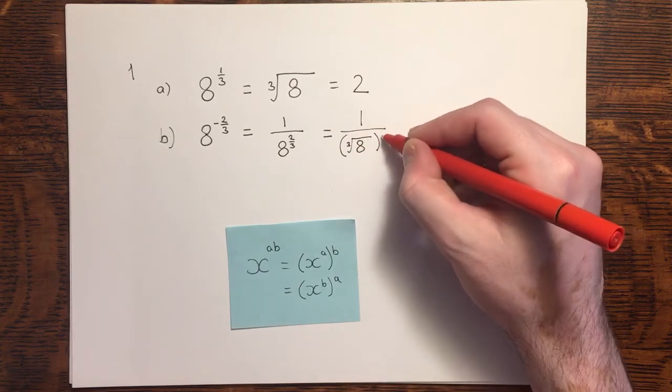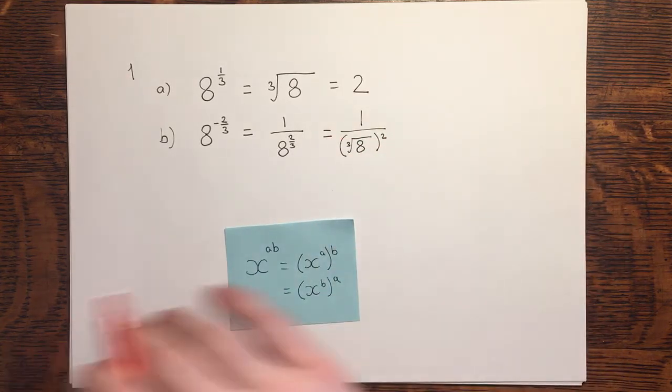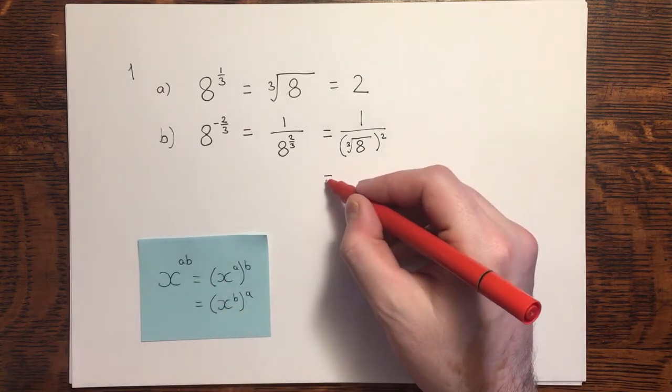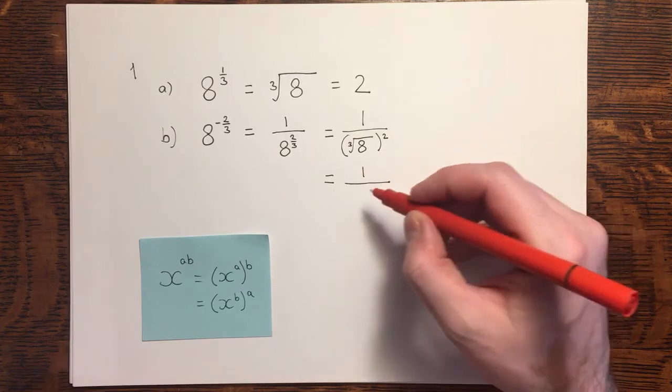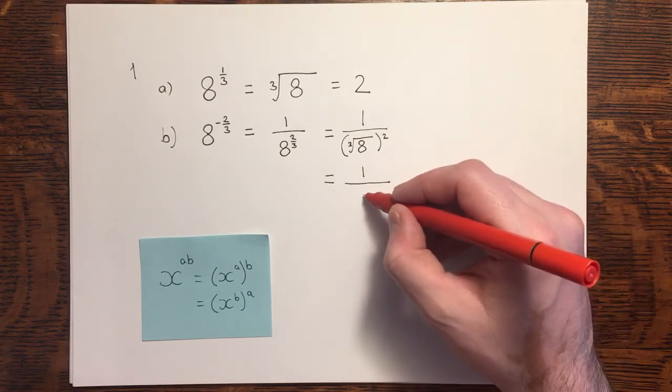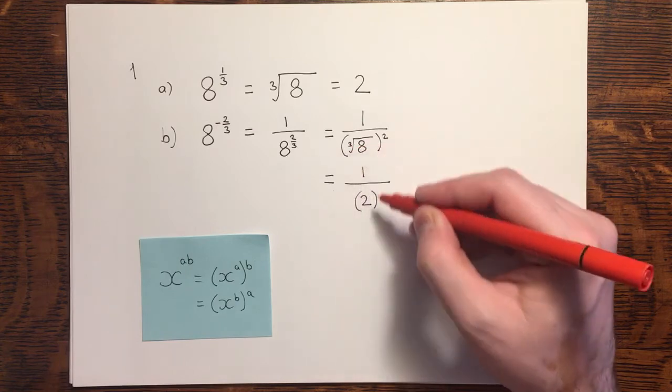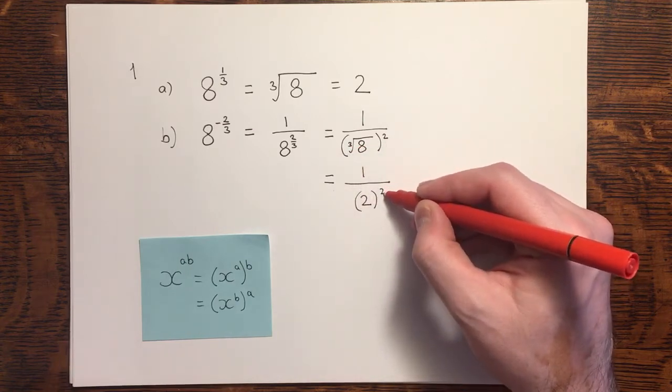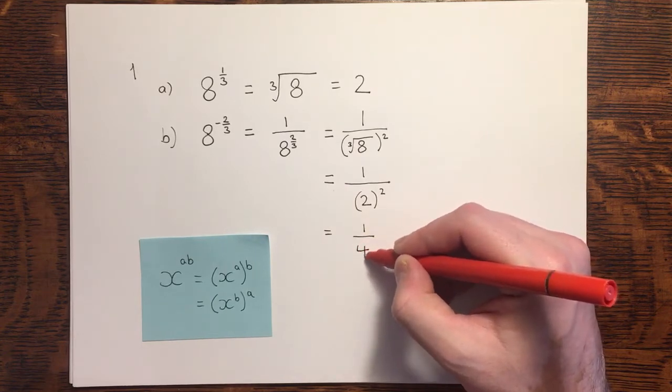And then once I've done that I'll apply the 2, the power of 2 which squares it. The cube root of 8 as we saw in part A is equal to 2. So having evaluated the cube root of 8 as 2, remember it's still being squared, which gives us 1 over 4, and I'll find the answer of a quarter.